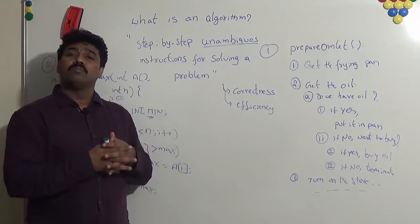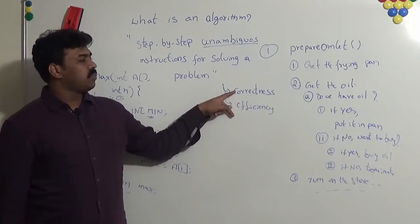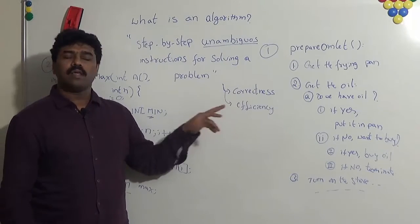How do we know whether the given algorithm is correct or not? How do we know whether the given algorithm is good or not? That we decide based upon these two properties: one is correctness and the other one is efficiency.